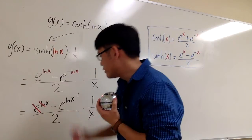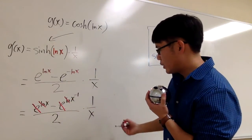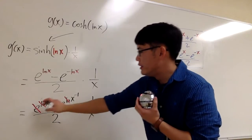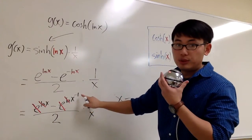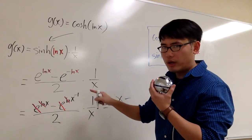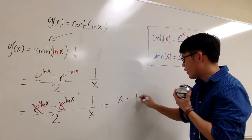e and the ln will cancel each other out. e and the ln will cancel each other out. And what do we have left? This is just x minus x to the negative 1. This is not negative x. This is x to the negative 1, which is the same as 1 over x.